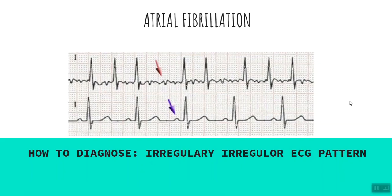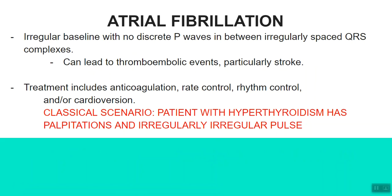Another thing to keep in mind about atrial fibrillation is that it can lead to thromboembolic events, especially stroke. So if a person with hyperthyroidism comes to you with neurological symptoms, keep in mind the possibility of atrial fibrillation and check the ECG — super high yield. Treatment for atrial fibrillation includes anticoagulation to prevent stroke, rate control, rhythm control, and even cardioversion if the patient is unstable and atrial fibrillation has converted into ventricular fibrillation.